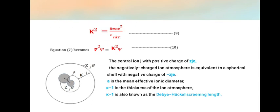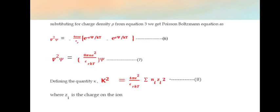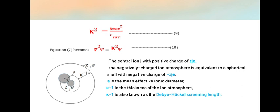κ² = 8πNe²/εRkT. From equation 7, we get the expression as ∇²ψ = κ²ψ.